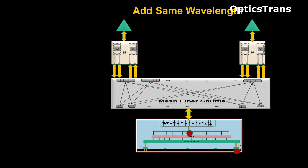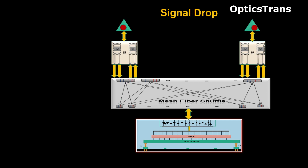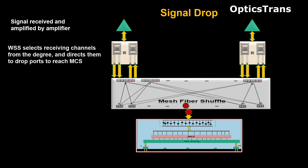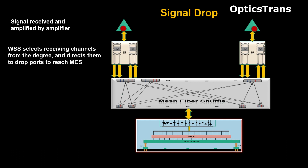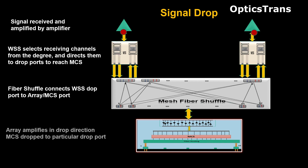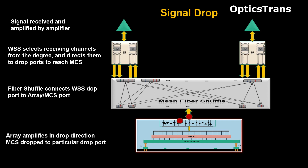Now, if the same wavelength is added, it is directed from MCS to a different degree, and from the fiber shuffle it is sent to that particular degree's WSS. In the drop direction, the signal is received at the amplifier, and the WSS selects channels and directs them to the correct drop port to reach the MCS. The array in the drop direction amplifies the signal, and the signal is dropped on the transponder.